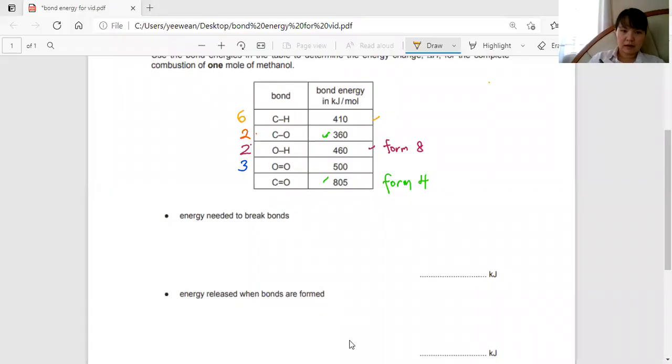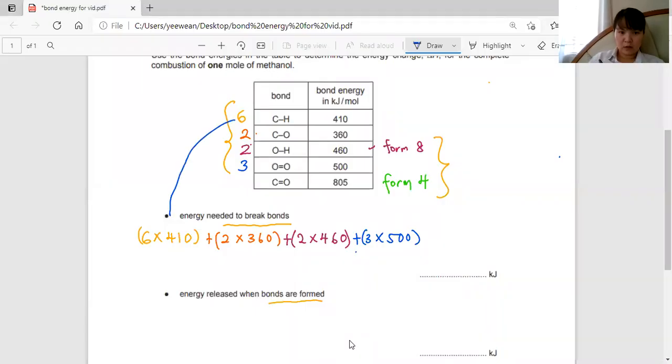Using a calculator, I'm going to total up all this for the bonds that have been broken and total up this for bonds that have been formed. Six times 410, two times 360, two times 460, and three times 500. I'm going to get 5600.